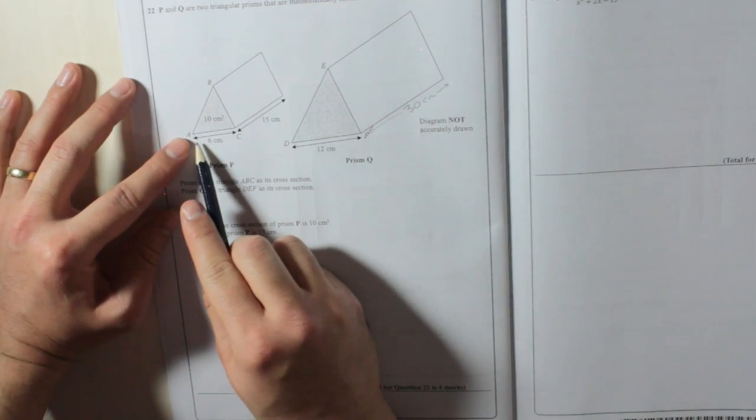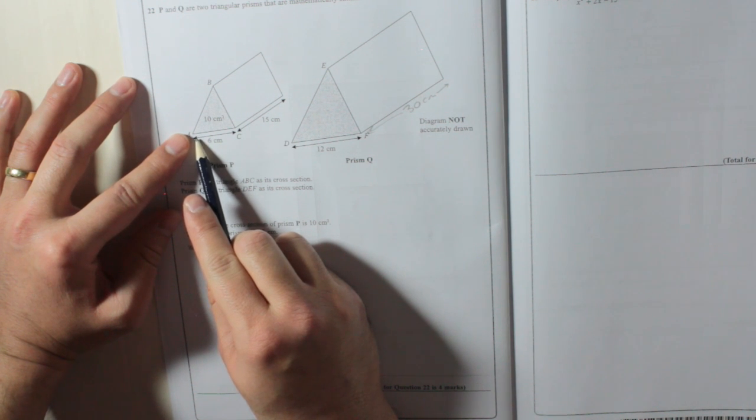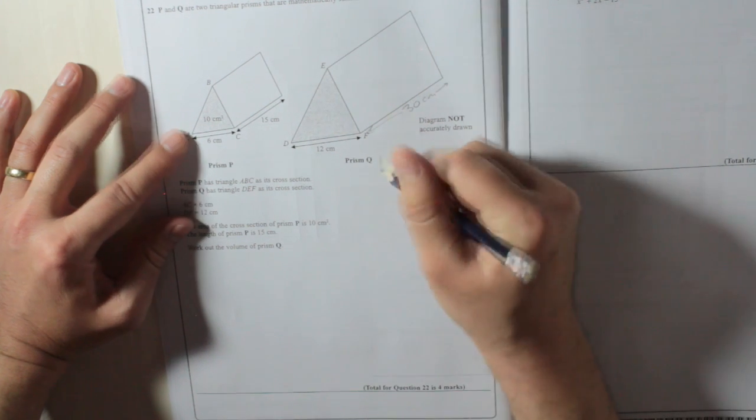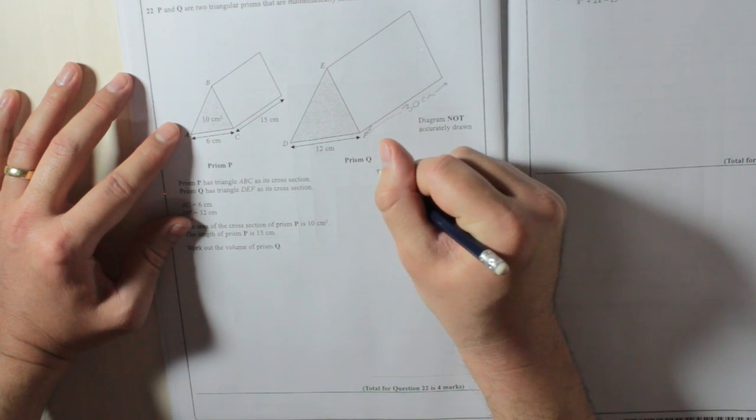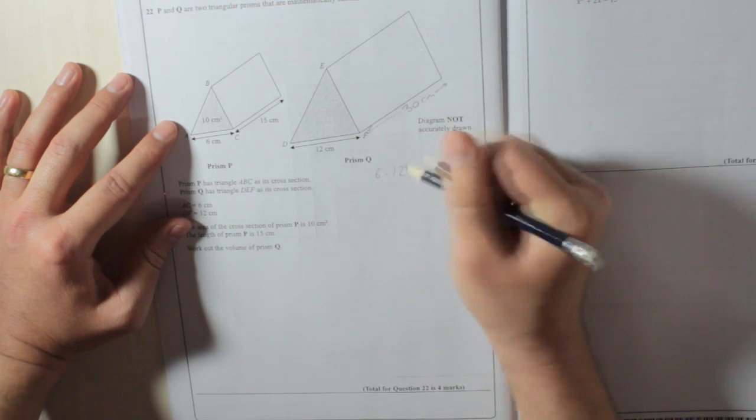Now, because the ratio of lengths is 6 to 12, the rule is 6 to 12. That's the length ratio.